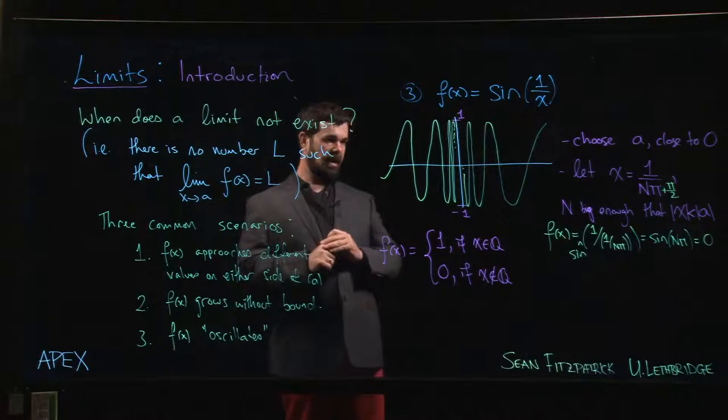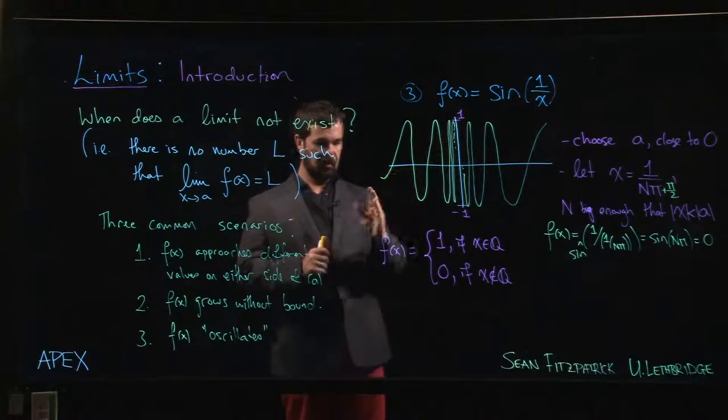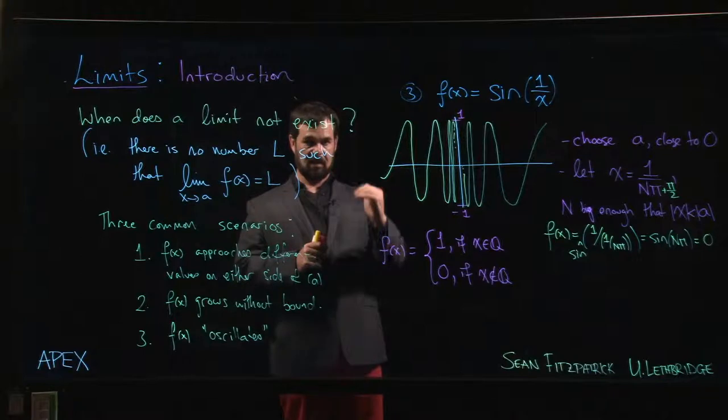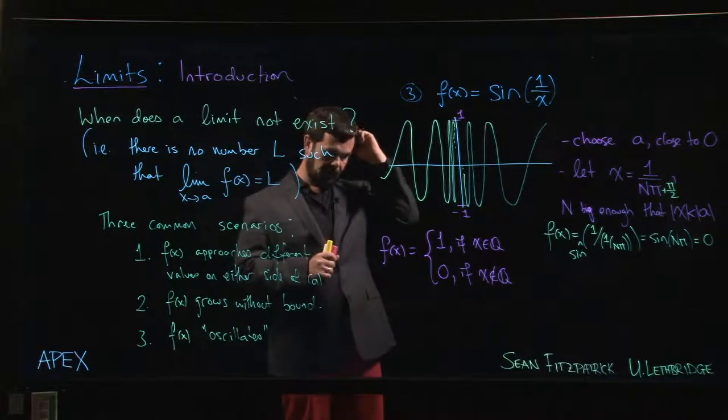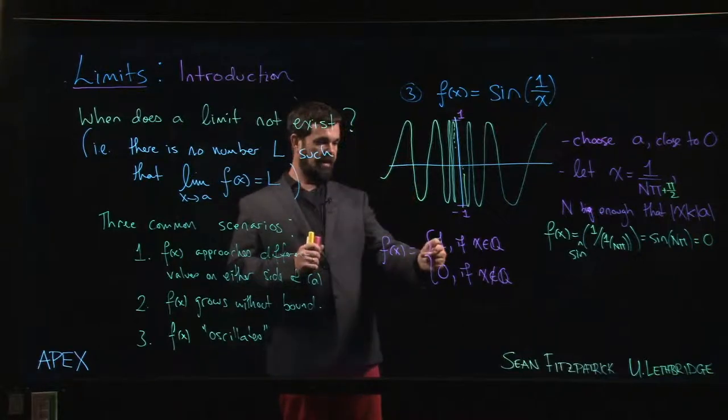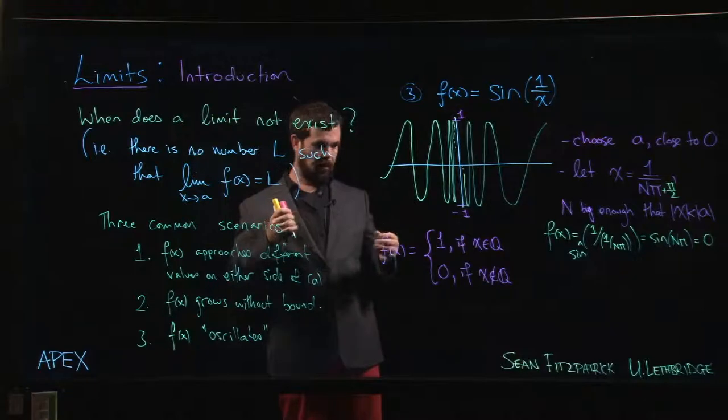That means you can't draw a graph like this because at every point, it's jumping from 1 to 0, from 1 to 0, 1 to 0, 1 to 0. It's jumping back and forth. It's never at either value for more than a point.